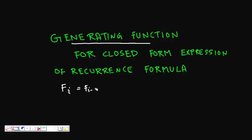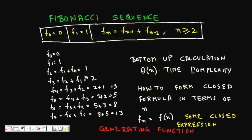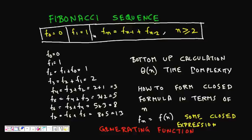The Fibonacci sequence is defined as: F(0) = 0, F(1) = 1, and F(n) = F(n-1) + F(n-2). This is a recurrence relation in which F(n) is the sum of the previous two terms, F(n-1) plus F(n-2). This is the recurrence formula, and usually we calculate it bottom-up.